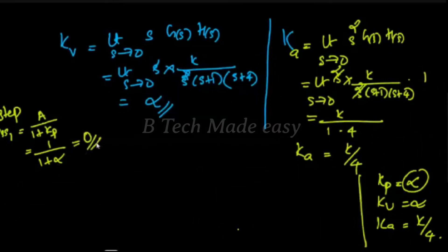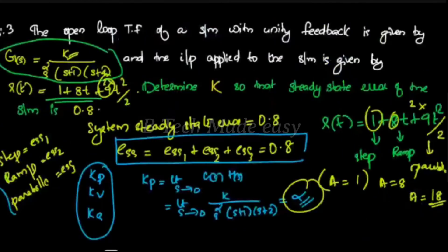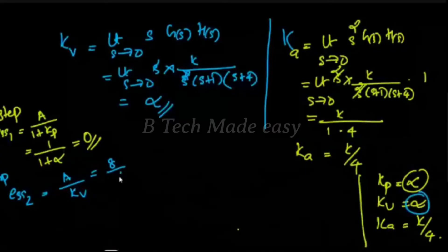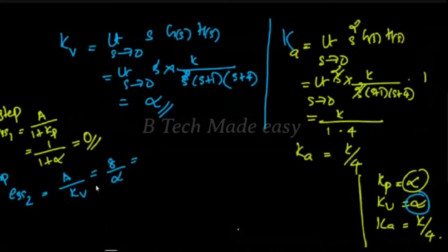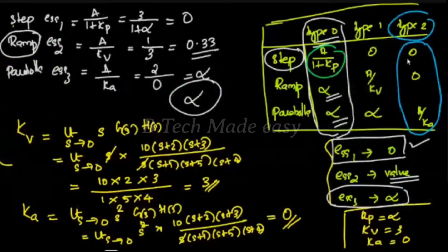Any quantity divided by infinity is equal to 0, so ESS1 and ESS2 are equal to zero. For ESS2, the ramp coefficient A is 8, so 8 divided by Kv equals 8 by infinity, which is 0. Looking at the type 2 chart, the value is 0 for both step and ramp inputs.